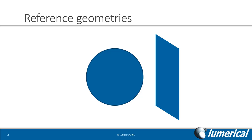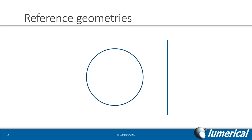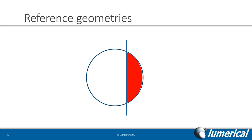In a two-dimensional simulation, a volume will translate into a surface and the surface will be equivalent to a line. Imagine there is a spatial overlap between two objects in your simulation. Reference geometries will enable users to define an attribute such as a doping profile for a partial volume of the simulation with any desired geometry, like the highlighted red area for example.